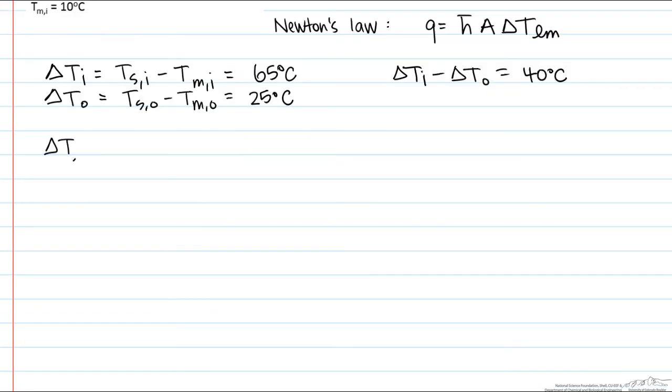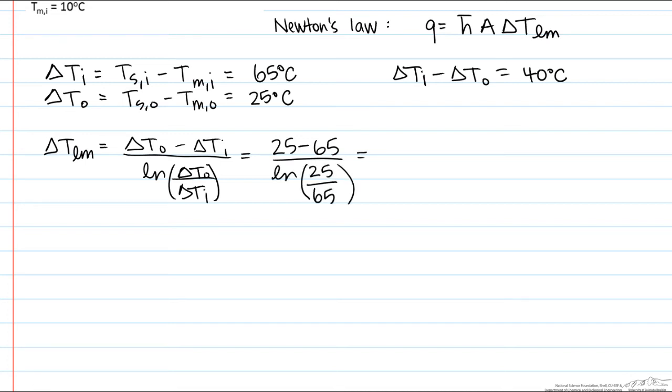Now let's look at our delta T log mean. That's going to equal our delta Ti minus delta To which is 65 degrees C divided by the natural log of 25 over 65. When you calculate that delta T log mean we come up with 41.9 degrees C.